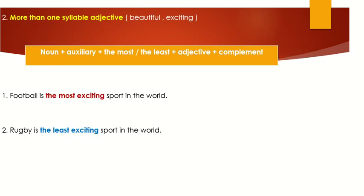For adjectives with more than one syllable, like 'beautiful,' 'exciting,' or 'comfortable,' the superlative is formed using 'the most' or 'the least' plus the adjective, plus complement. Examples: 'Football is the most exciting sport in the world.' Here we add 'the most' plus the long adjective. 'Rugby is the least exciting sport in the world.' Rugby is the least exciting sport in the world.